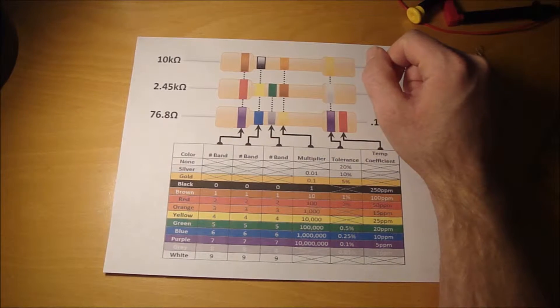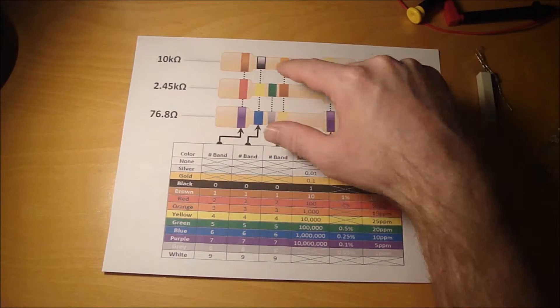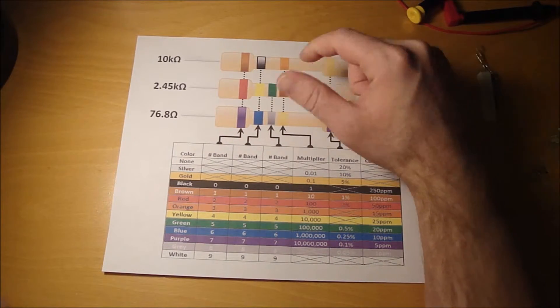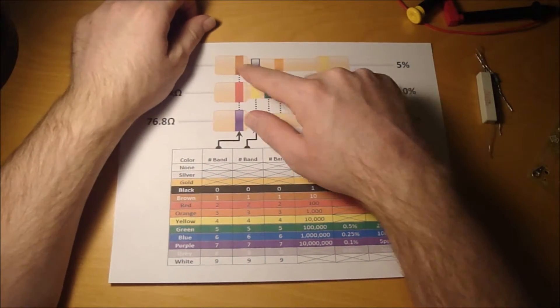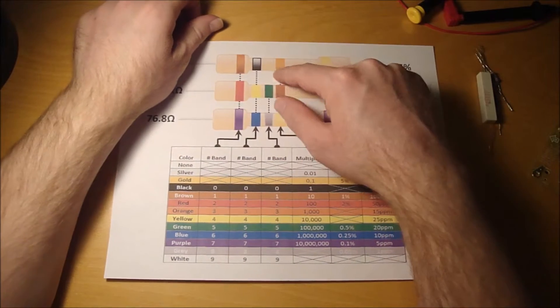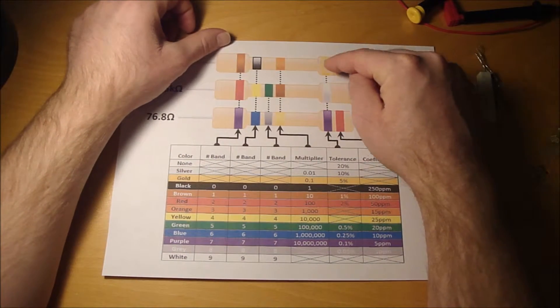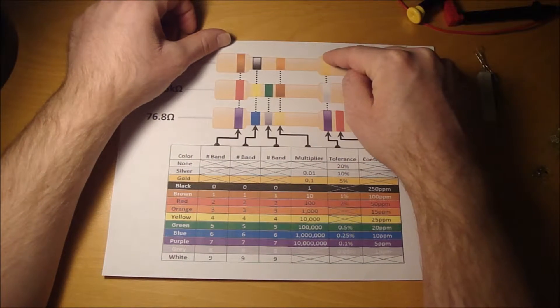How you know where to start reading the colors is by where the gap is. So you'll have your number and multiplier bands, and then a gap, and then your tolerance band.